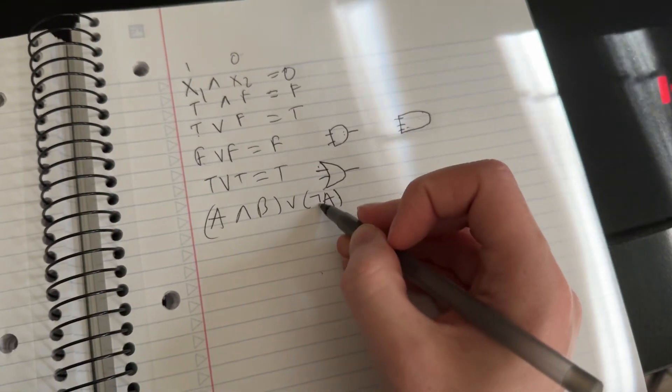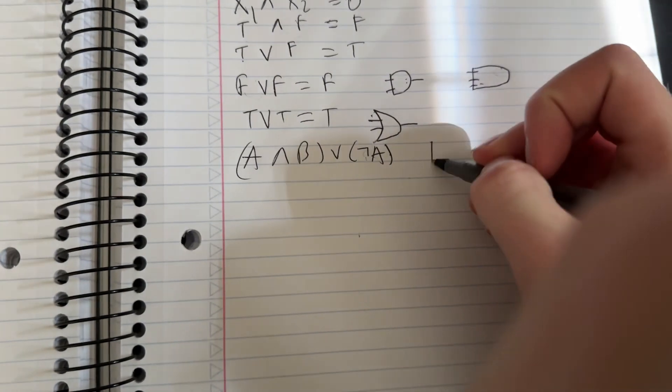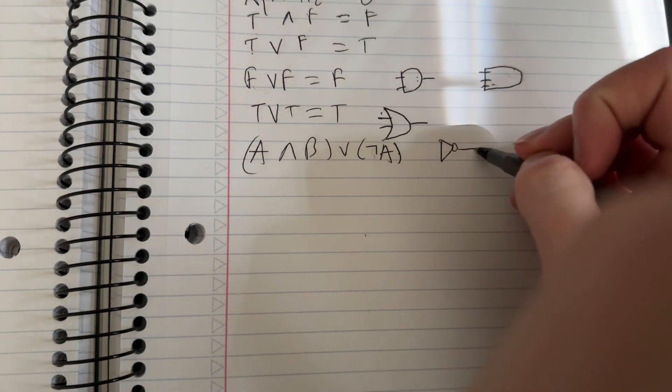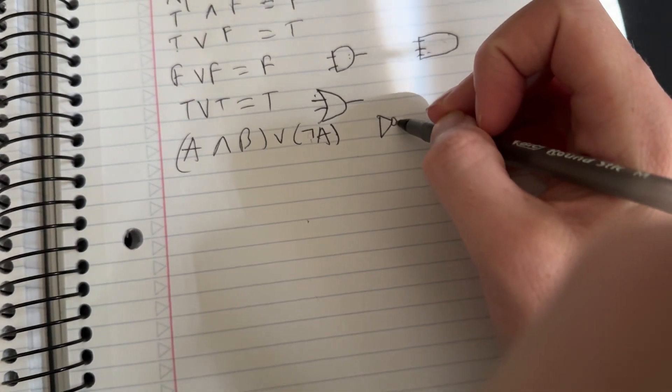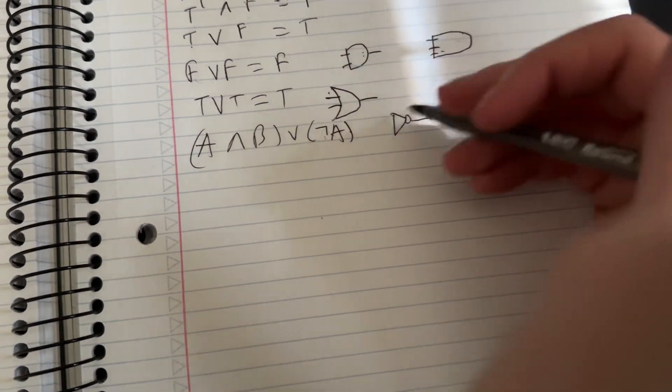This is the symbol for not generally. And a not gate looks like this. It's a sideways triangle with a circle on the end to symbolize the not.